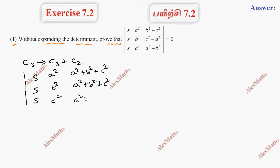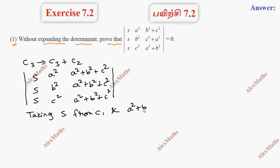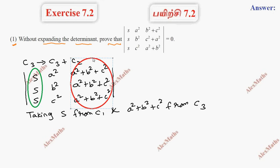Now, a squared plus b squared plus c squared is column 3. At the same time, column 1 is s. So, taking s common from column 1 and a squared plus b squared plus c squared common from column 3, the entire column 1 is s and column 3 is a squared plus b squared plus c squared.